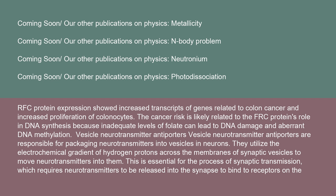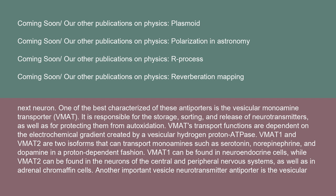Vesicle neurotransmitter antiporters are responsible for packaging neurotransmitters into vesicles in neurons, utilizing the electrochemical gradient of hydrogen protons across synaptic vesicle membranes — essential for synaptic transmission. One of the best-characterized is the vesicular monoamine transporter (VMAT), responsible for the storage, sorting, and release of neurotransmitters, as well as protecting them from intoxication. VMAT's transport functions are dependent on the electrochemical gradient created by a vesicular hydrogen proton ATPase. VMAT1 and VMAT2 are two isoforms that transport monoamines such as serotonin, norepinephrine, and dopamine in a proton-dependent fashion. VMAT1 is found in neuroendocrine cells, while VMAT2 is found in neurons of the central and peripheral nervous systems and in adrenal chromaffin cells.